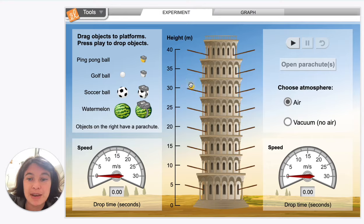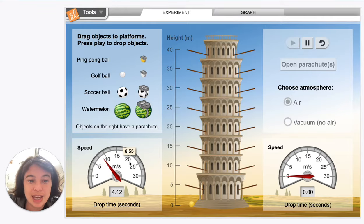If we drop this from 30 meters in height, keep an eye on what's going on with this speedometer. Notice what the arrow is doing. It increases up to 8.55 and then it just kind of stayed there. So we stayed at 8.55 meters per second for that last bit of the fall.